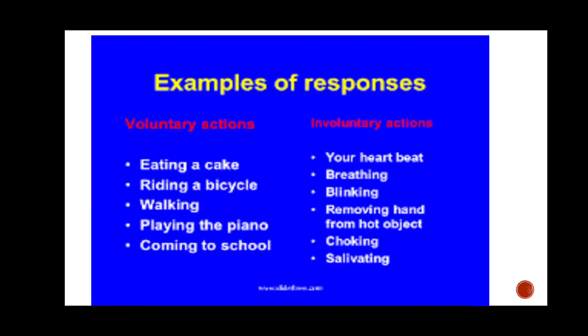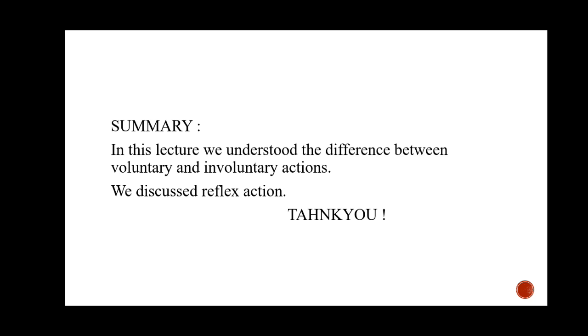Examples of voluntary actions include riding a bicycle, walking, playing the piano, or coming to school — you have control over these. Involuntary actions include your heartbeat — you cannot tell your heart to stop beating. Other involuntary actions include blinking, removing your hand from a hot object, choking, and salivating. These are not at all in your control.